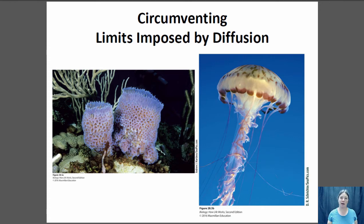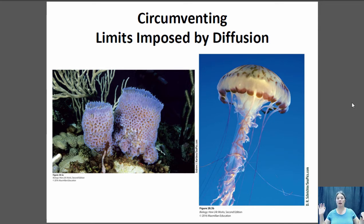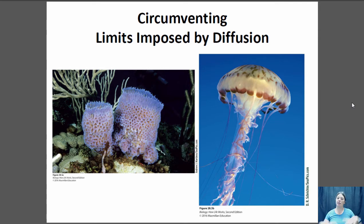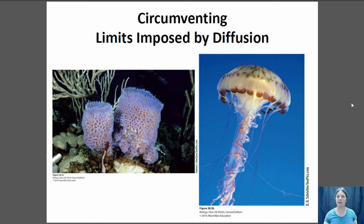You're limited by diffusion ability, so even simple multicellular organisms like sponges and jellyfish have ways to move liquids more efficiently. Some cells within sponges have flagella that create a current pulling water in through the holes at the side of the sponge and pushing it out the top. The jellyfish has a pumping motion as it swims that pumps water in and out of the inside of the jellyfish, allowing nutrients and gases to get closer to cells so that diffusion can then take place.